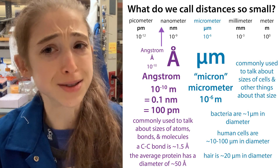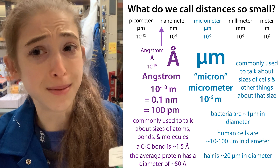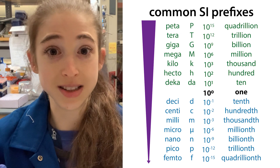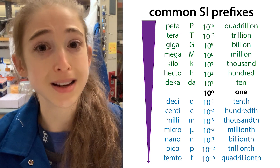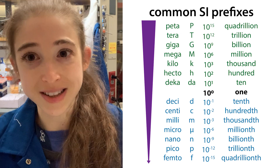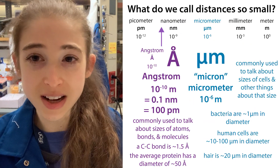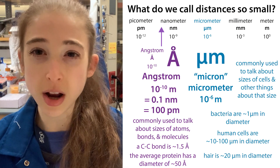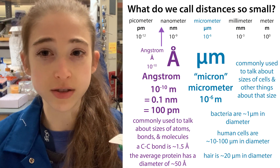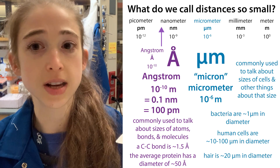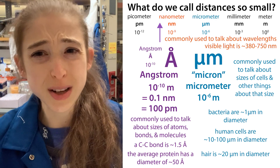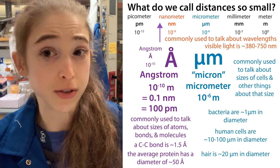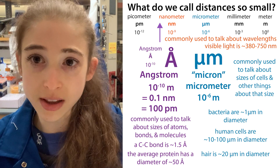Micron actually was an official unit, but then it got demoted because they decided to use micro to mean 10 to the minus 6. That's just one of the cool facts I'm going to talk about today, as well as how we use this terminology, how to do some conversions, and also nanometers — because we're not rebels all the time.